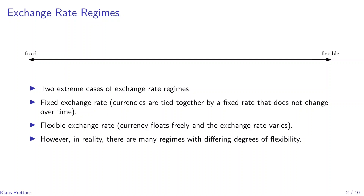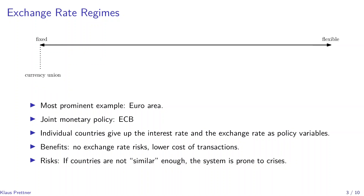In reality, however, there are many regimes that have different degrees of flexibility, and we will discuss them sequentially. Starting at the left-hand side of this spectrum with the fixed exchange rate regimes, the most extreme one would be a currency union. In this case, a country gives up its own currency and joins a union with other countries that also give up their own currencies, and then they all use one currency. Therefore, all of them give up their own sovereign monetary policy. The most prominent example of this may be the euro area.